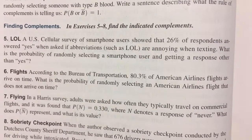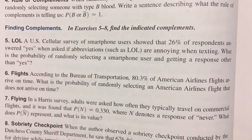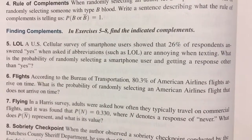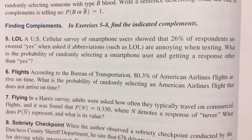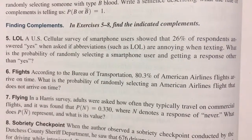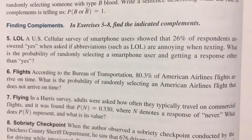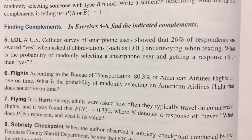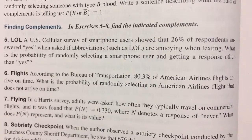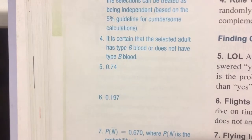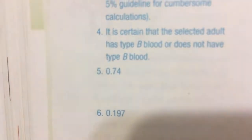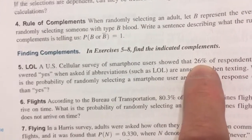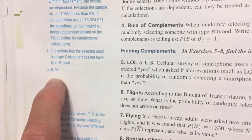We are to find the indicated complements. We're doing number 5 now — the LOL problem. A U.S. cellular survey of smartphone users showed that 26% of respondents answered yes when asked if abbreviations such as LOL are annoying when texting. What is the probability of randomly selecting a smartphone user and getting a response other than yes? This is a complement problem. We're going to get the complement of those that answered yes: 100% minus 26% is 74%, so 1 minus 0.26 is 0.74.